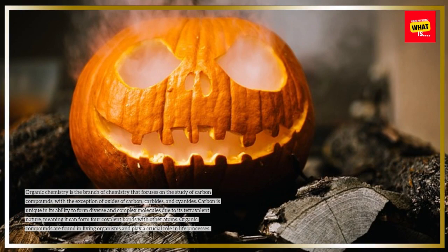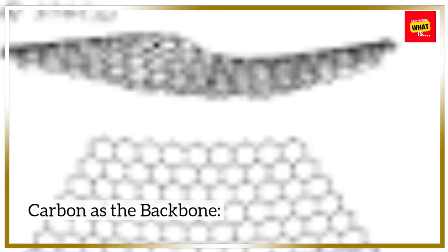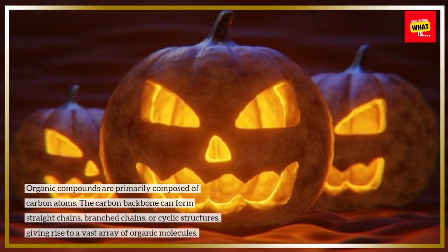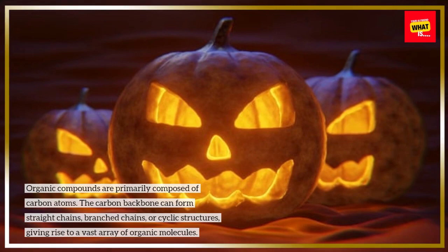Key Characteristics of Organic Chemistry. Carbon is the backbone. Organic compounds are primarily composed of carbon atoms. The carbon backbone can form straight chains, branched chains, or cyclic structures, giving rise to a vast array of organic molecules.